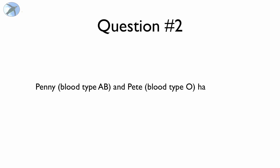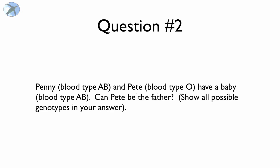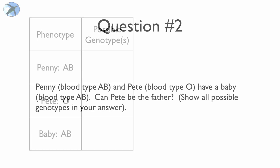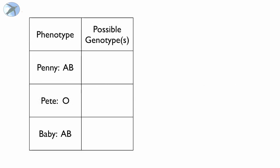Okay, what about another one? Penny, blood type AB, and Pete, blood type O, have a baby, blood type AB. And Penny says, hey, the baby inherited my blood type. But Pete isn't so sure. Can he be the father? So once again, you want to fill out this little table. We've got the phenotypes of Penny, Pete, and the baby.